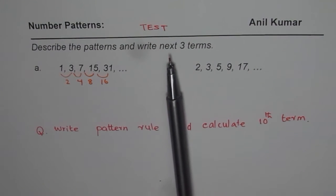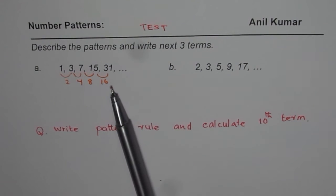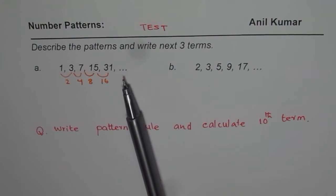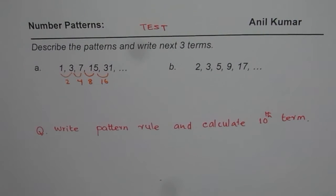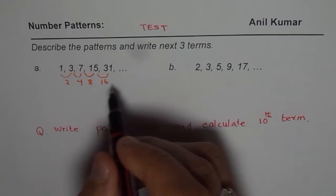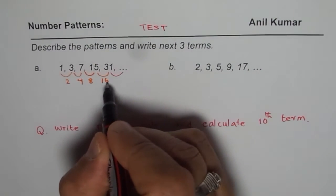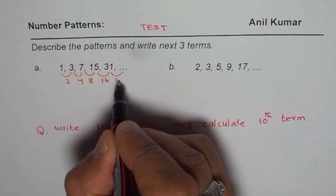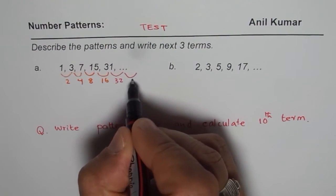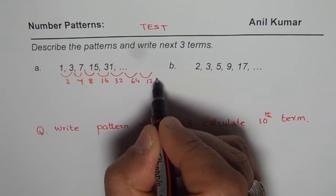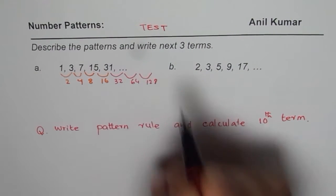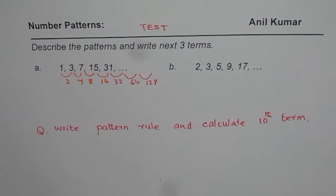It is not very difficult to write the next three terms. You have to add 32 and then 64 and get the next three terms. So to get the next three terms, looking into this pattern, you can add 2 times 16 which is 32, and then 64, and then 128, and get the next three terms. Not a difficult task.